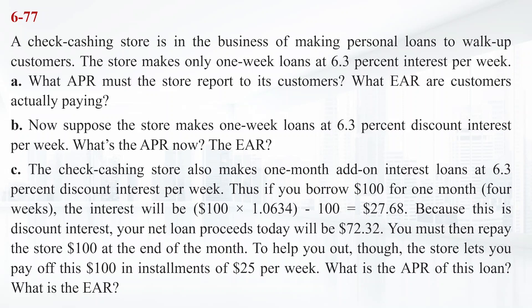The C requirement is the check-cashing store also makes one-month add-on interest loans at 6.3 percent discount interest per week. Thus if you borrow $100 for one month, the interest will be $27.68. Because this is discount interest, your net loan proceeds today will be $72.32. You must then repay the store $100 at the end of the month. To help you out though, the store lets you pay off this $100 in installments of $25 per week. What is the APR of this loan? What is the EAR?